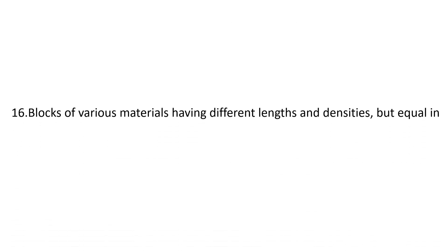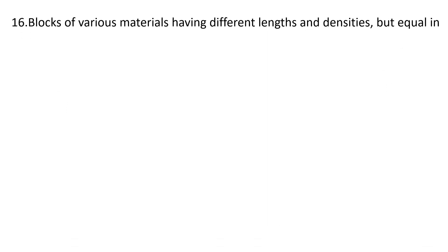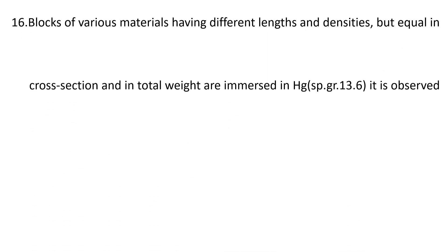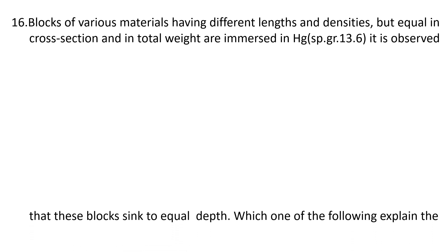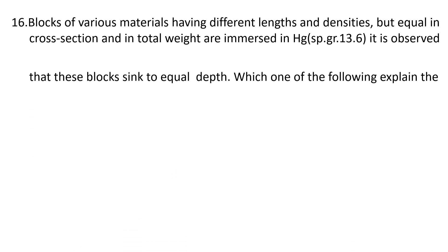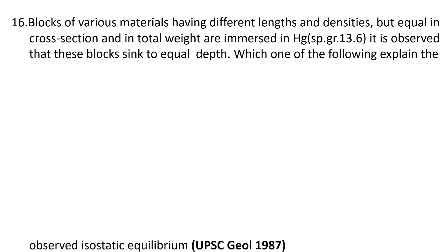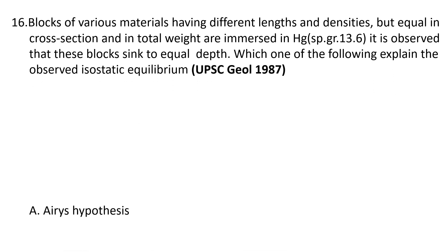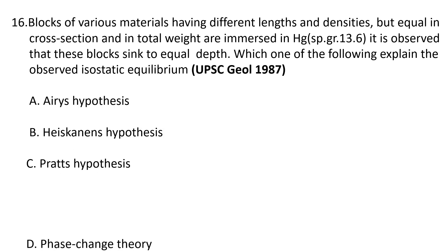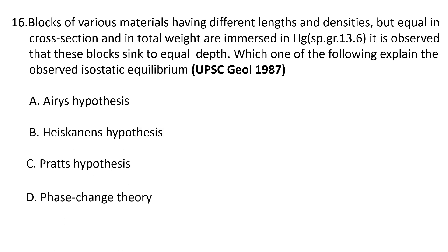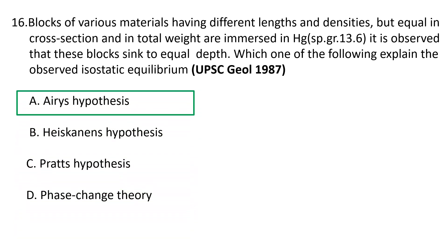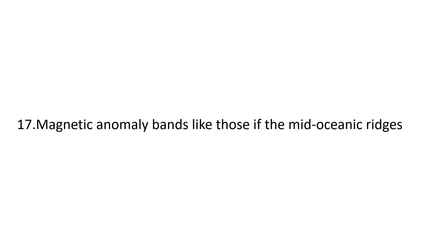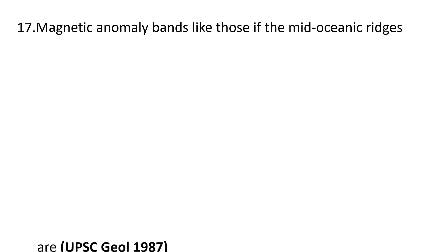Sixteenth question: blocks of various materials having different lengths and densities but equal in cross-section and total weight are immersed in a liquid of specific gravity 13.6. It is observed that these blocks sink to equal depth. Which of the following explains the observed isostatic equilibrium? a) Airy's hypothesis, b) Heiskanen's hypothesis, c) Pratt's hypothesis, and d) phase change theory. The correct answer is a) Airy's hypothesis.